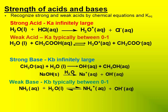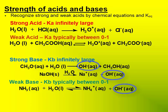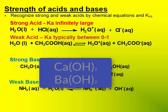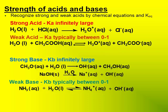Regarding bases, the word polybasic applies, meaning more than one hydroxide is generated per formula unit. CH3O-, NaOH, and NH3 are all monobasic substances because they generate one hydroxide for each formula unit. Calcium hydroxide and barium hydroxide are good examples of polybasic substances — they are in fact dibasic because they generate two hydroxides for each formula unit.